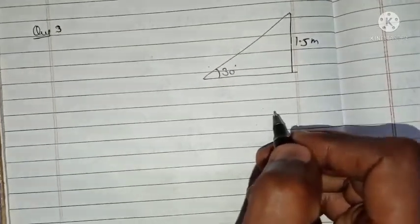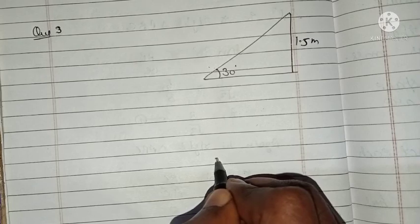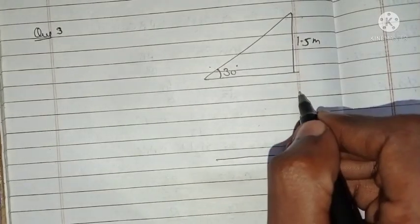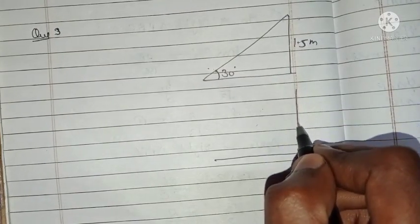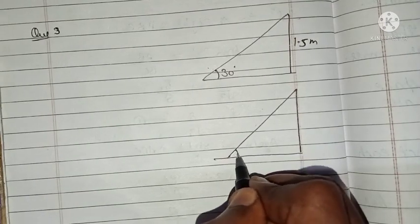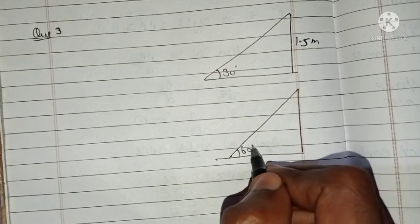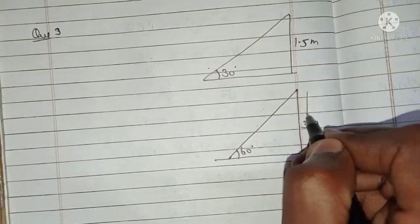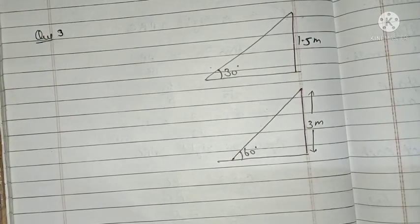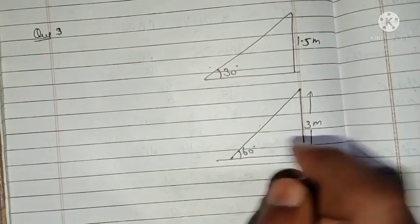For elder children, the height is 3 meters and inclination is 60 degrees. We have to find the length of the slide in each case.